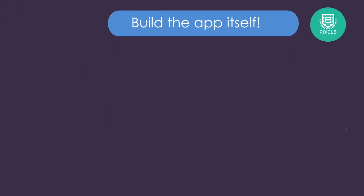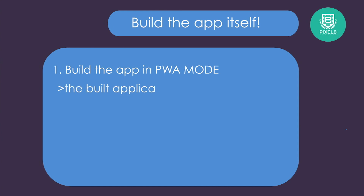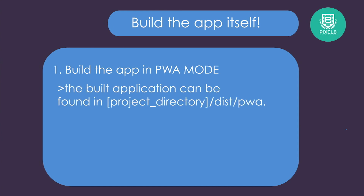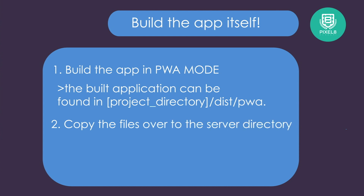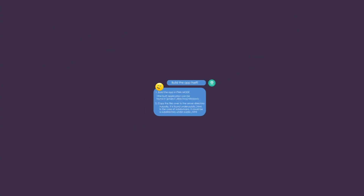In order to build the app, you need to first build it in PWA mode using a specific command. Once you do that command, the generated file will be in a specific directory. In terms of deployment, you simply need to copy those files over to your selected hosting environment. If you do those steps in that specific order, you will be able to deploy your progressive web application.